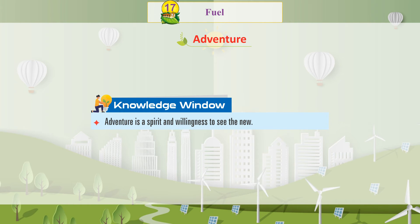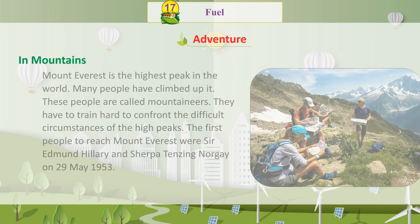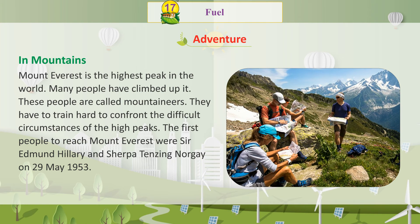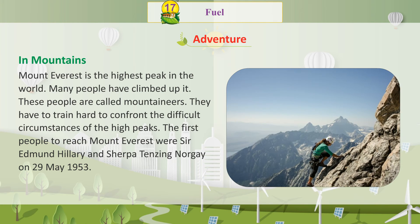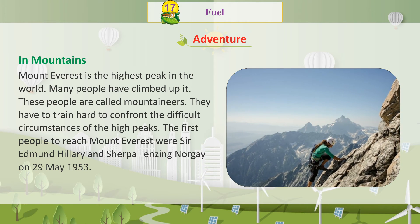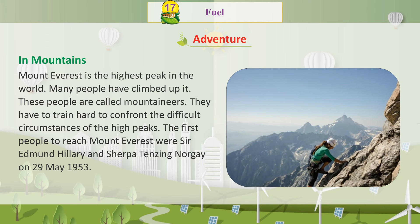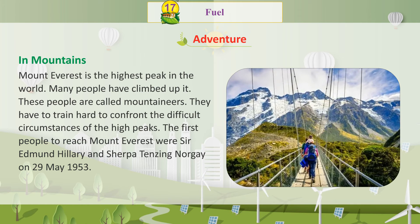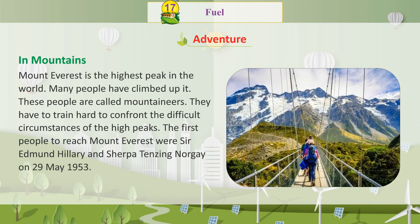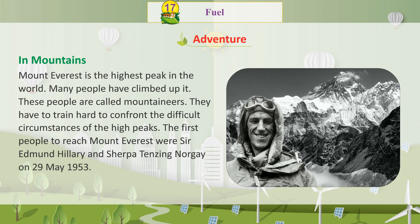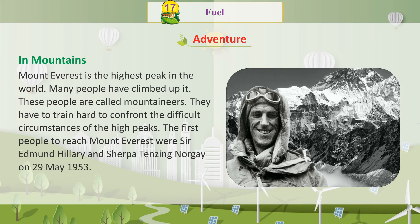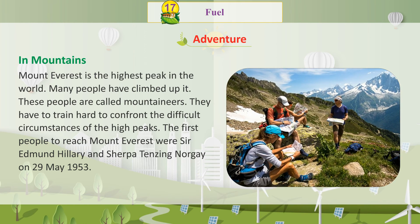Knowledge window: Adventure is a spirit of willingness to see the new. Mount Everest is the highest peak in the world. Many people have climbed it and these people are called mountaineers. They have to train hard to confront the difficult circumstances of the high peaks. The first people to reach Mount Everest were Sir Edmund Hillary and Sherpa Tenzing Norgay on 29th May 1953.